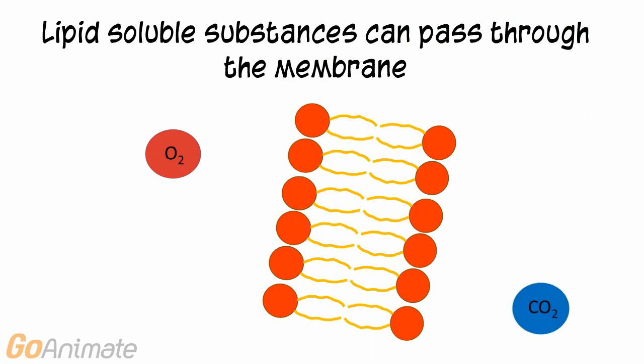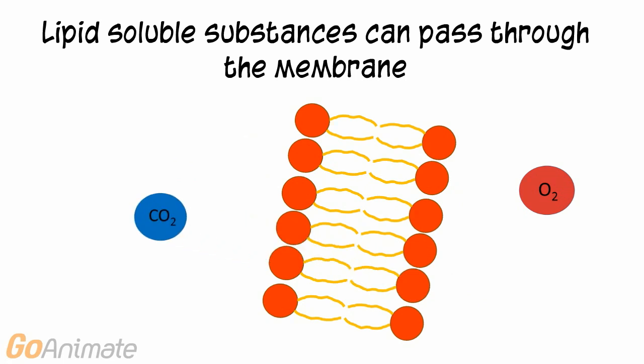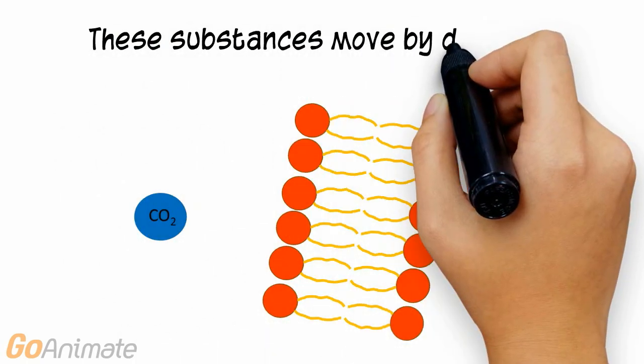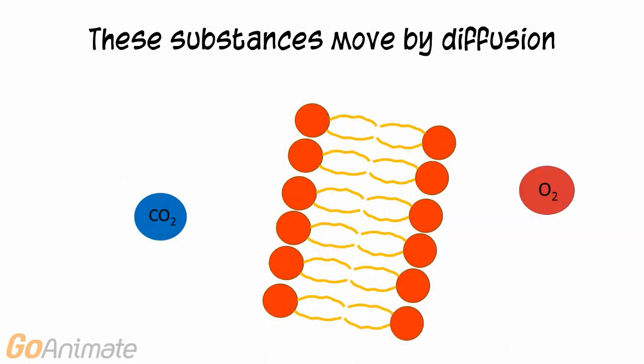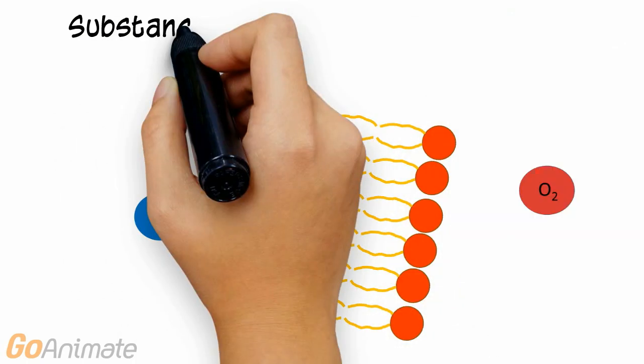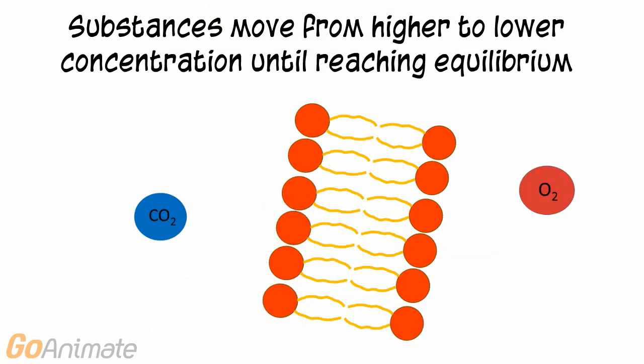Lipid-soluble substances can pass through the phospholipid bilayer. Some examples of lipid-soluble substances include oxygen and carbon dioxide. Steroids are another example. We can say these substances move by diffusion. In diffusion, substances move from higher to lower concentration until reaching equilibrium.